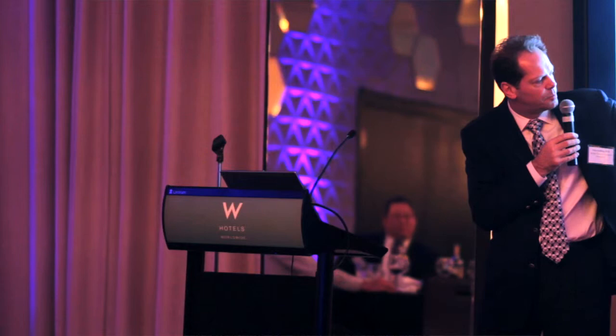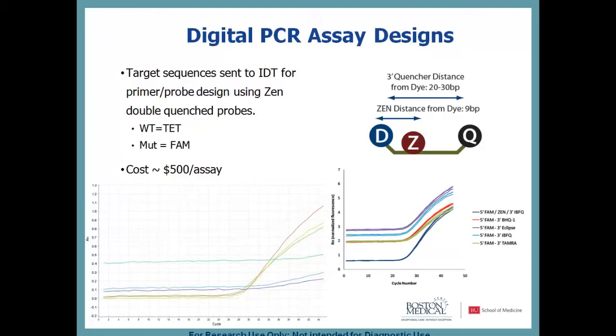We didn't see the low-background performance shown in the IDT spec sheets when we ran our probes. Of the wild-type probes, three looked okay — very much like the published data — but one had high background and very little signal, and two others had low background but still very little signal. It was even worse when we went to the mutant probes: only one of them looked good.